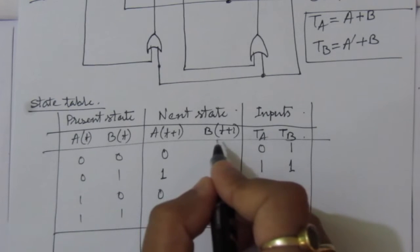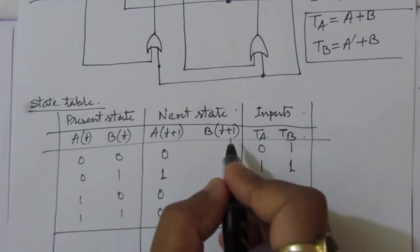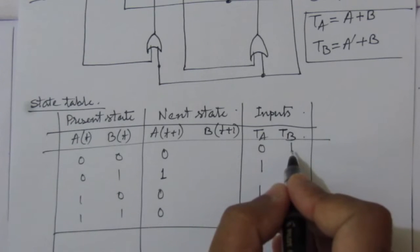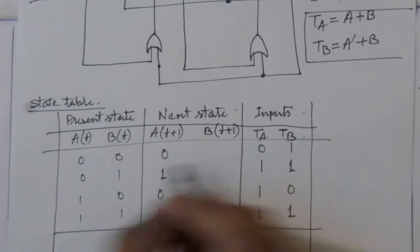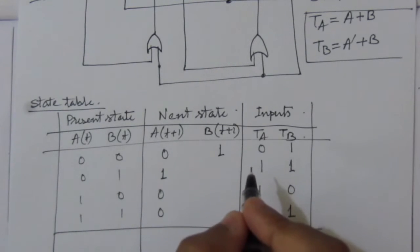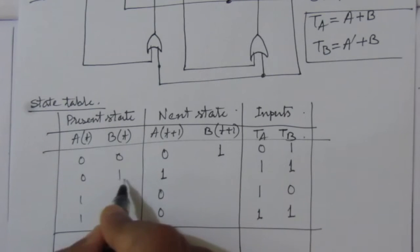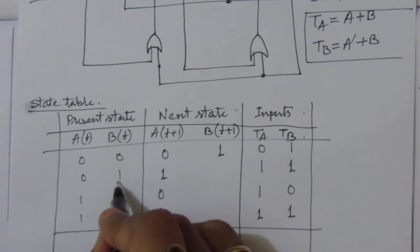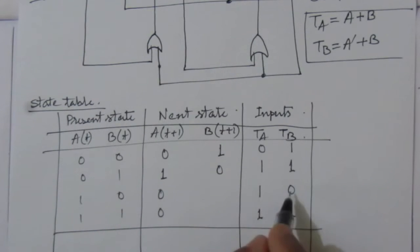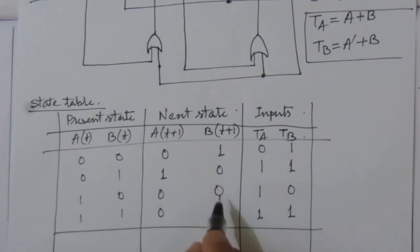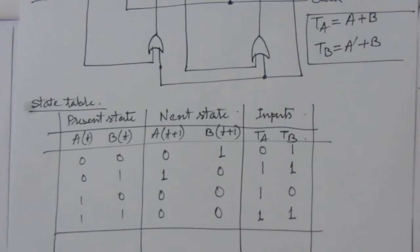Similarly for next state B(T+1): TB=1, so B=0 is inverted to 1. TB=1, so B=1 is inverted to 0. TB=0, so no change — B remains 0. TB=1, so B=1 is inverted to 0. This completes the state table.